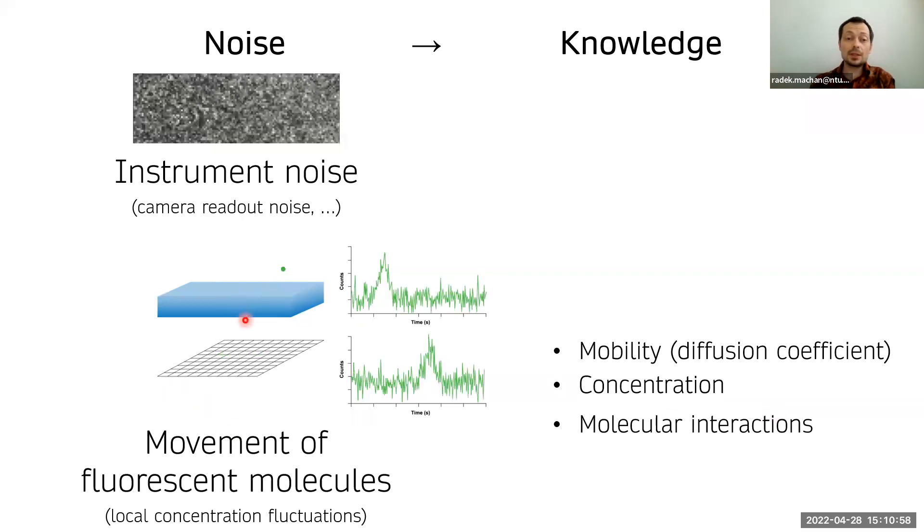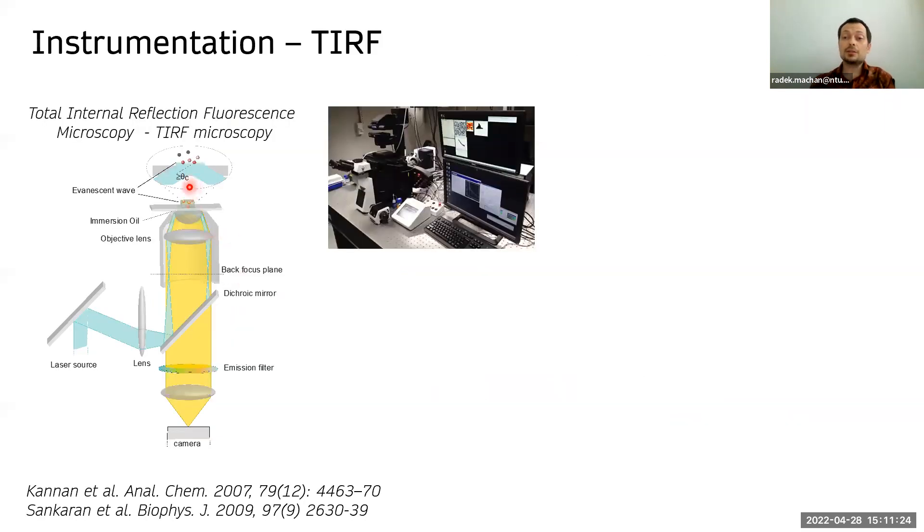So when we look at these fluctuating fluorescence signals in each pixel, they come from a small volume within the sample, which is defined in the lateral direction by the projected camera pixel convolved with the microscope point spread function. And in the axial direction, it can be defined by the penetration depths of total internal reflection.